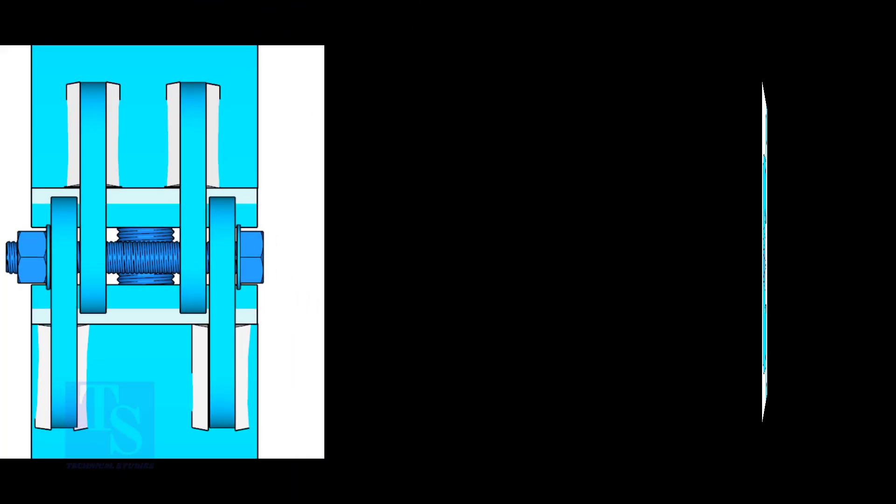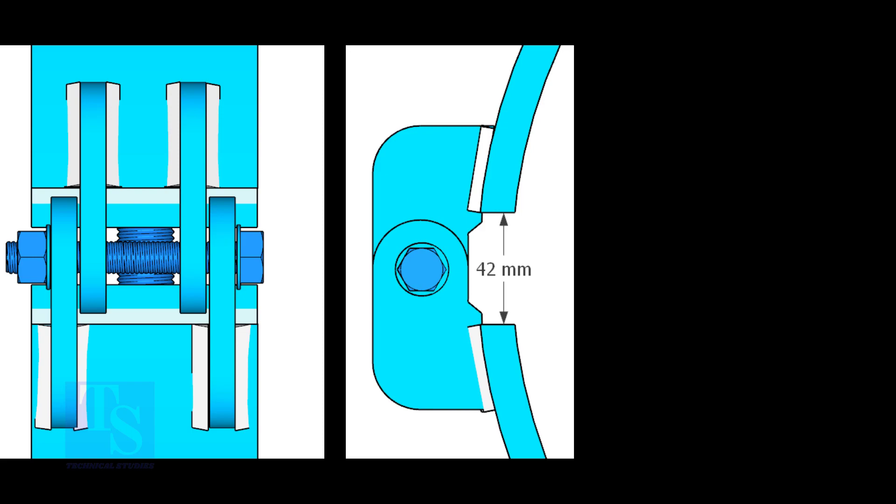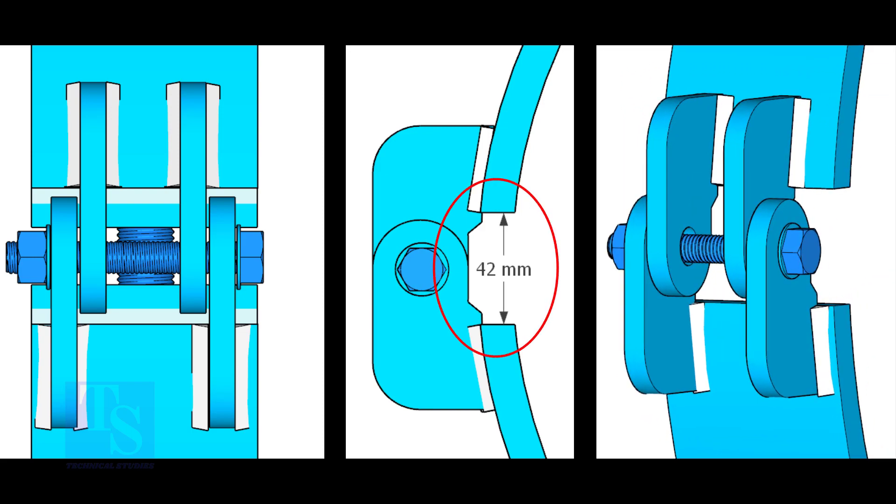Weld the hinges as shown. 5mm fillet weld is enough. The gap shown is not very important, it depends on the thickness of the clamp.